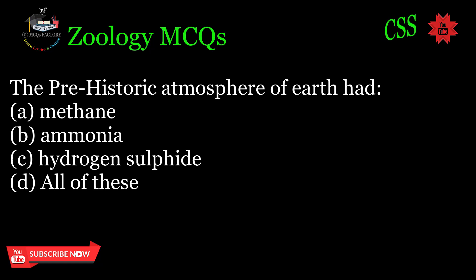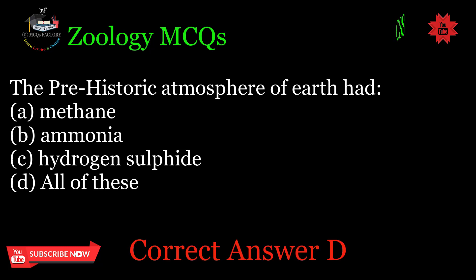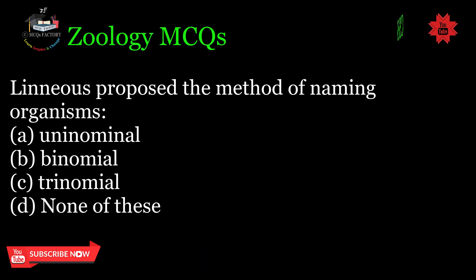The prehistoric atmosphere of Earth had: A. Methane, B. Ammonia, C. Hydrogen sulfide, D. All of these. Correct answer: D.